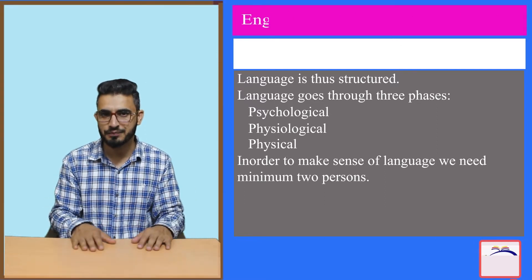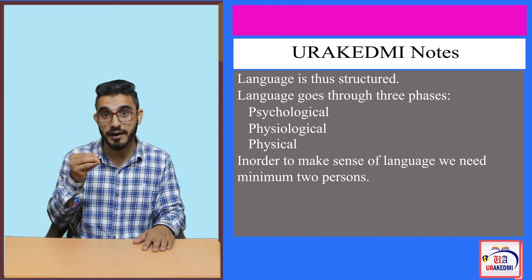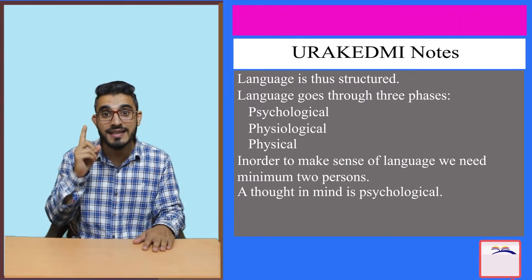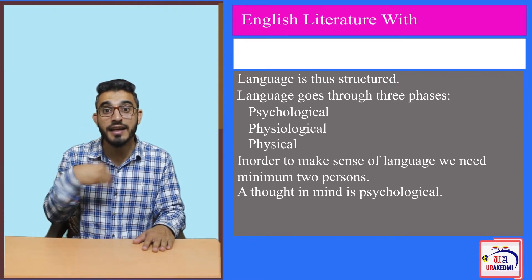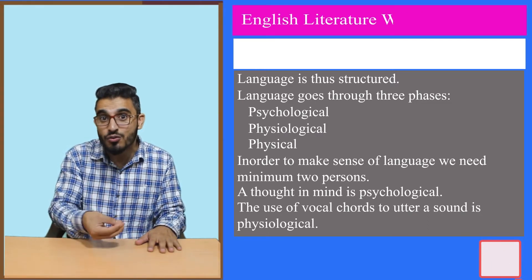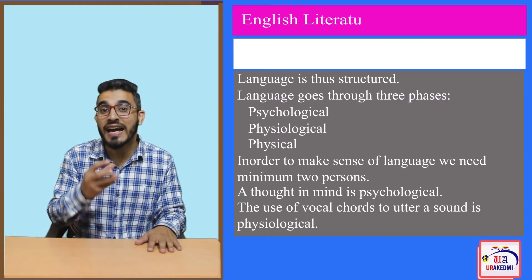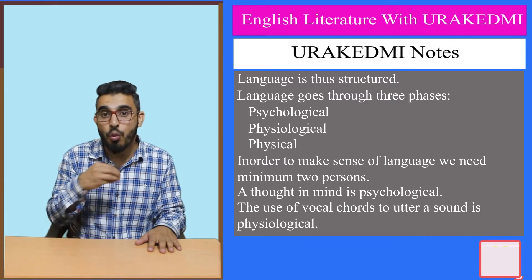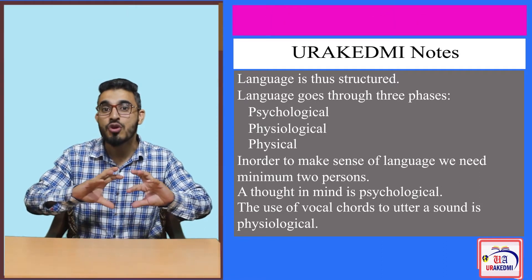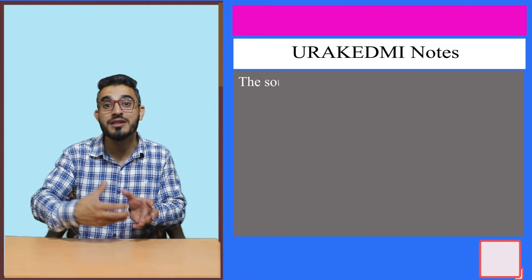How does this function? It begins from the psychological perspective. For example, A has a thought in his mind — that is the psychological part of language. An idea has struck his mind, and as that idea strikes, he utters a word. As he utters, he uses vocal cords, making language physiological because an organ is being used. Once he has uttered the word or sentence, it gets converted into sound waves, and as it becomes sound waves, it becomes physical.